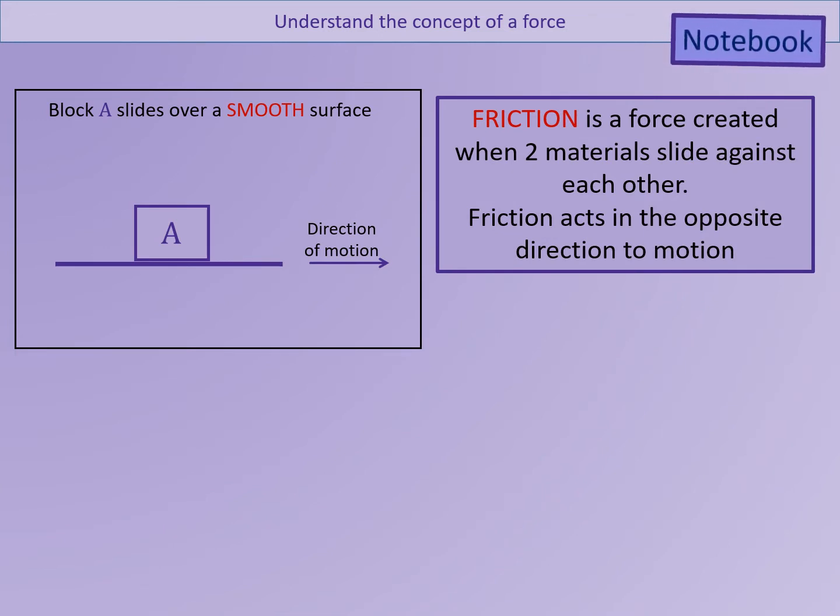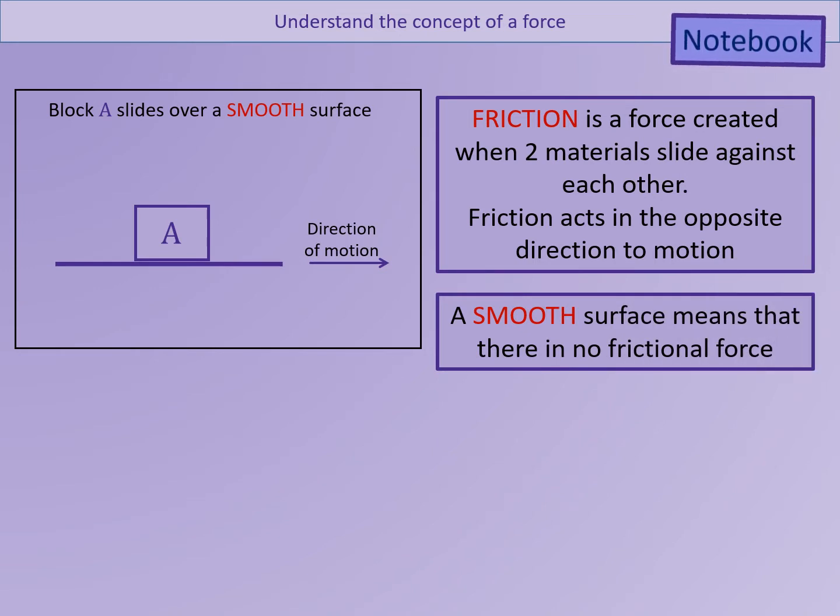First of all, block A is sliding over a smooth surface in the direction shown. Friction is a force that is created when two materials slide against each other, and friction always acts in the opposite direction to the motion of the object. If a surface is smooth, that is the mathematical word to tell us that there is no friction at all.